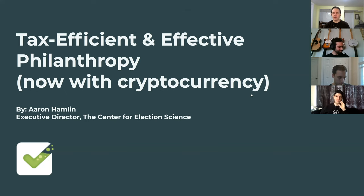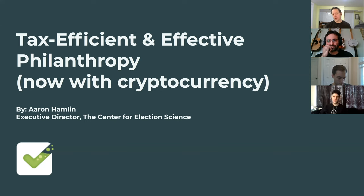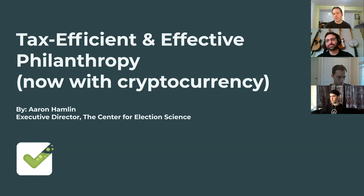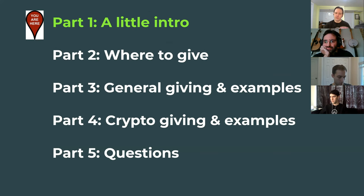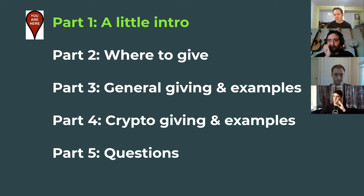Today we're going to talk about tax efficient giving — making it so you pay the least amount of taxes possible when you give, thus increasing the total amount you give. We'll cover different types of tax strategies and how they apply with cryptocurrency. The outline covers: where to give, general examples of tax efficiency, specific application to cryptocurrency, and then questions.